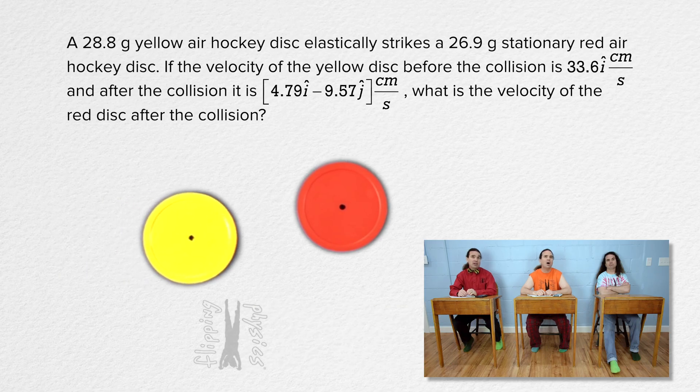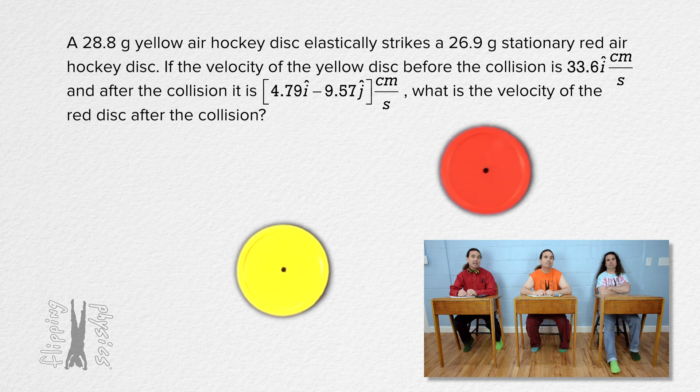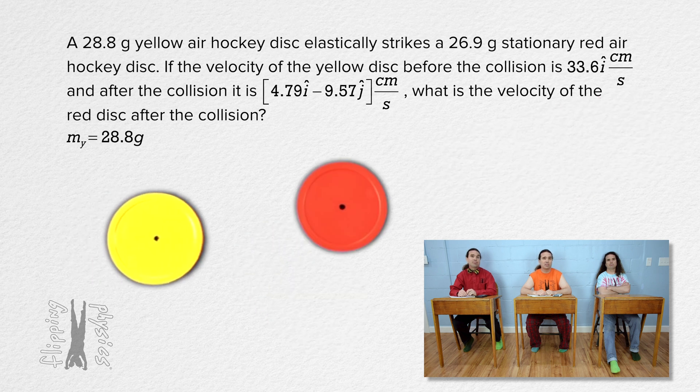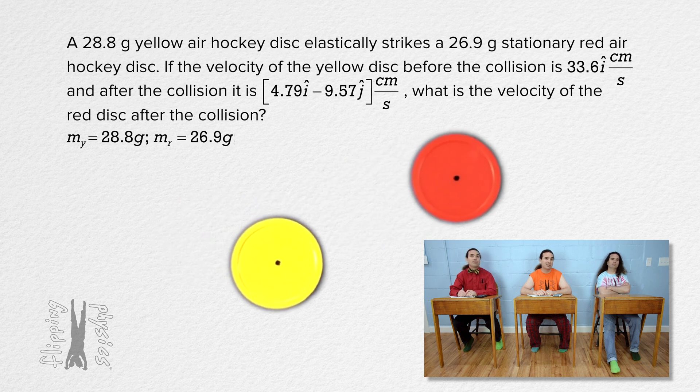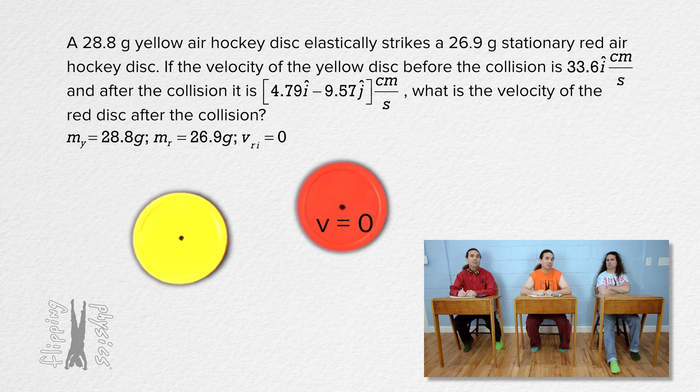A 28.8 gram yellow air hockey disc elastically strikes a 26.9 gram stationary red air hockey disc. The mass of the yellow disc is 28.8 grams, the mass of the red disc is 26.9 grams, and the initial velocity of the red disc is zero.